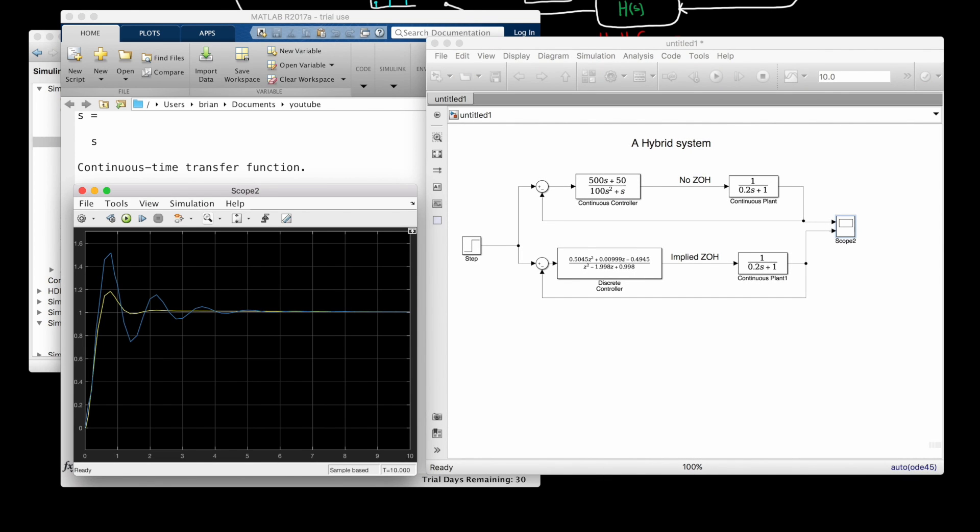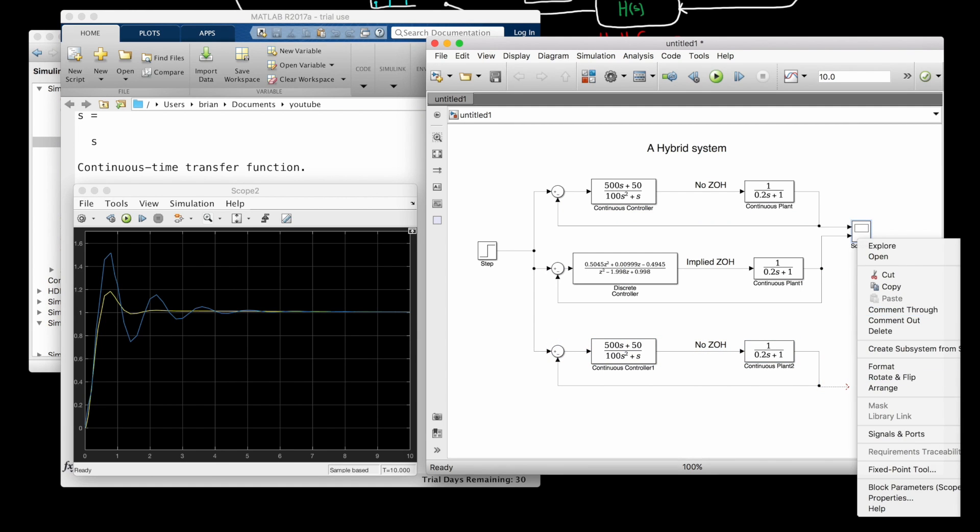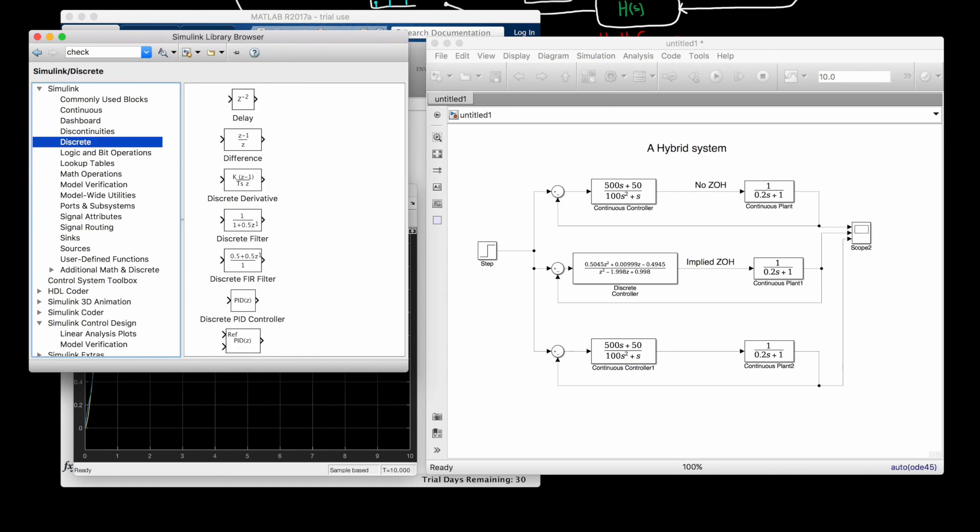Now I can transfer the controller coefficients over to a discrete transfer function block in Simulink and simulate the response to a step input. Basically we're putting a controller designed for a system without a zero-order hold into a hybrid system with a zero-order hold. And the yellow line is our continuous controller response from before. And the blue line is the discrete controller response. As you can see, our overshoot jumped to over 50%, and the settle time is now around 3 or 4 seconds.